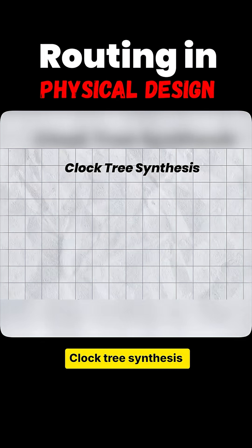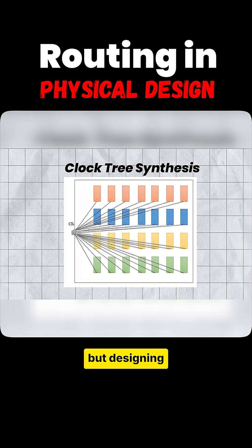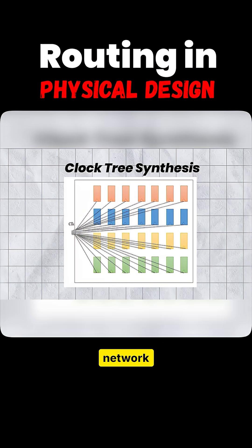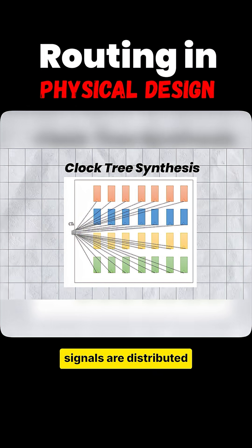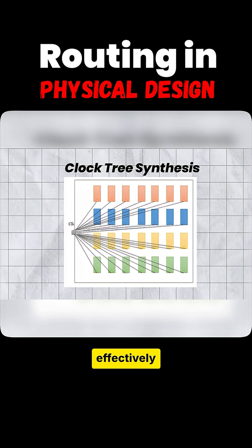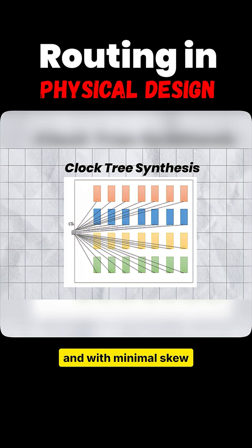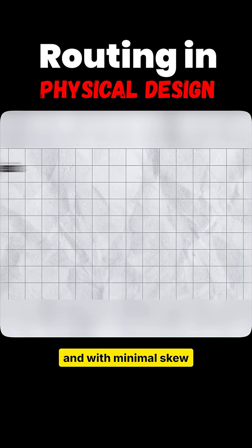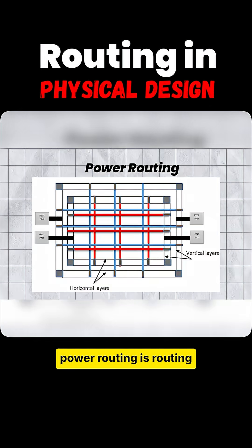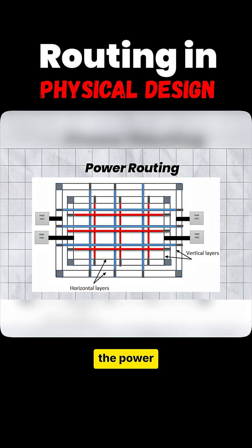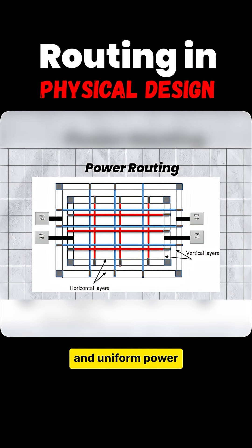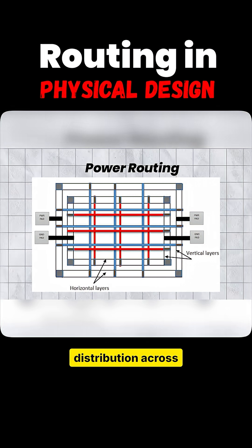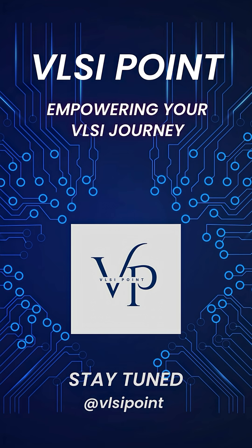Clock presynthesis is designing a clock distribution network to ensure clock signals are distributed effectively and with minimal skew. Power routing is routing the power and ground lines to provide sufficient and uniform power distribution across the chip.